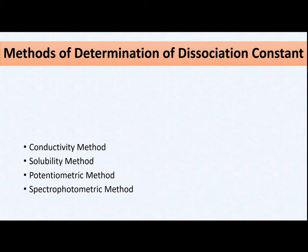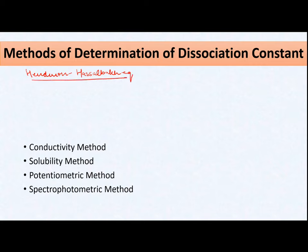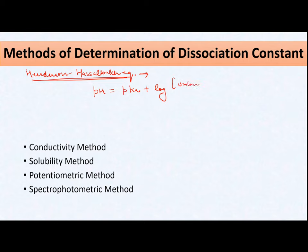Next — different methods of determination of ionization constant. First, I would like to discuss one equation called the Henderson-Hasselbalch equation. We discussed this equation in module 1 under factors affecting solubility, under solvent-related factors and the effect of pH. For a weak acid, the Henderson-Hasselbalch equation is: pH = pKa + log([unionized form] / [ionized form]).